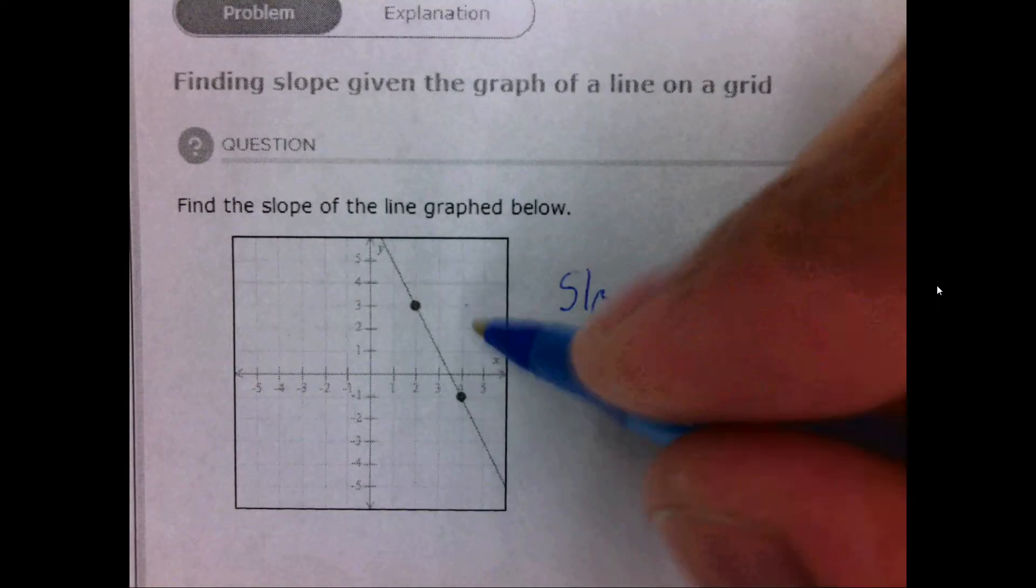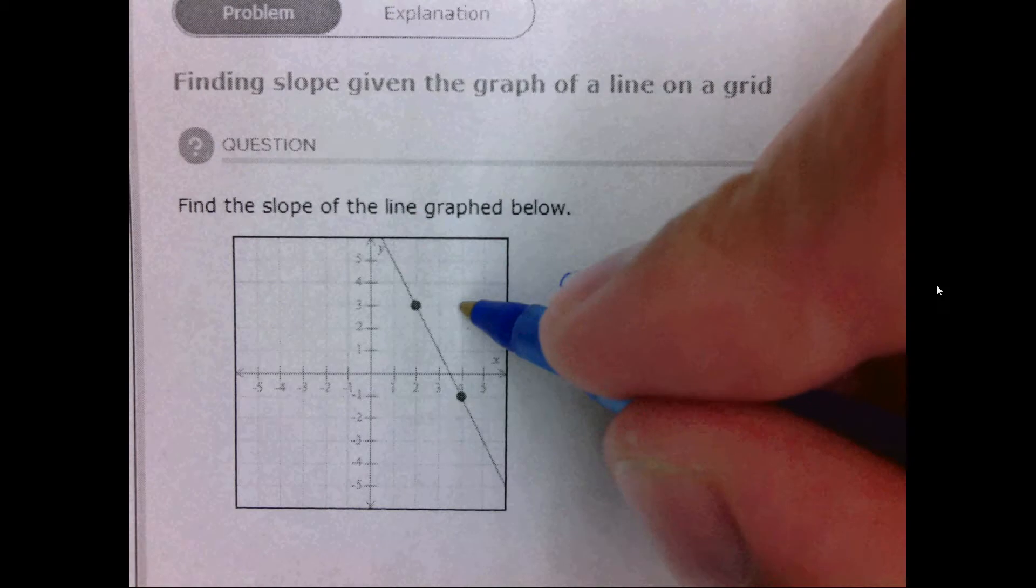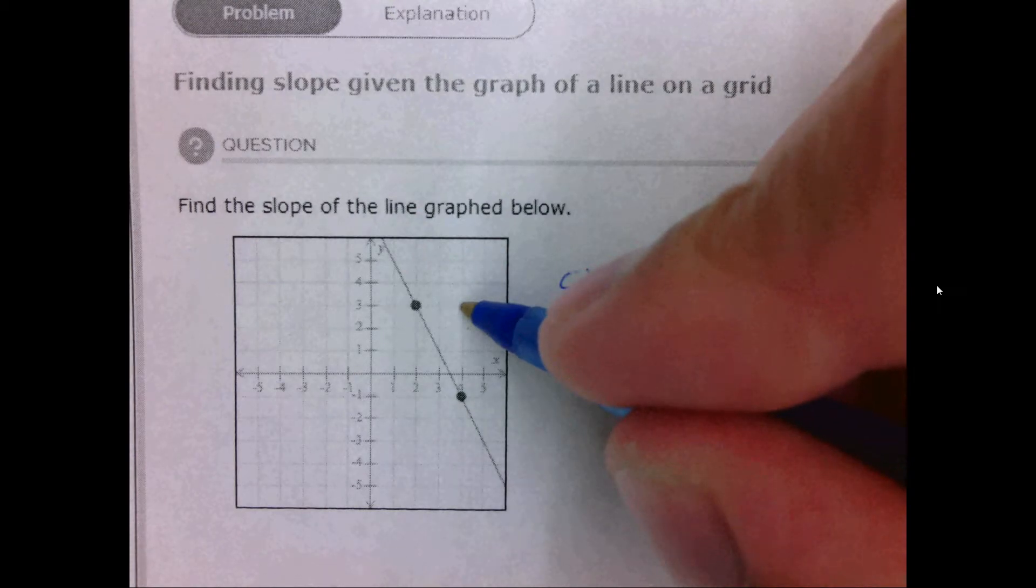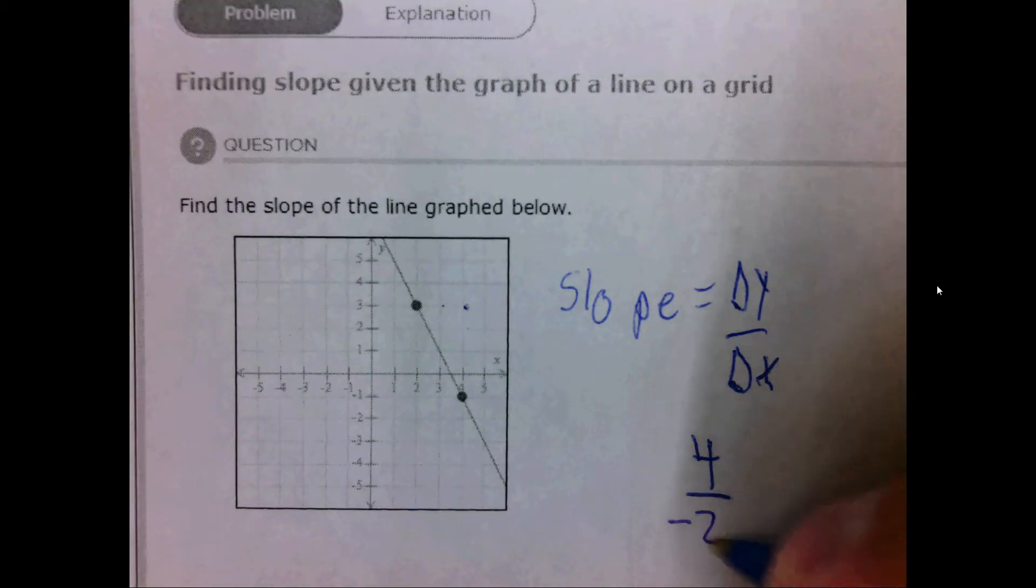Then we need to find delta x. Once we go up 4 we have to go backwards on the x-axis, 1, 2. So it's negative 2.